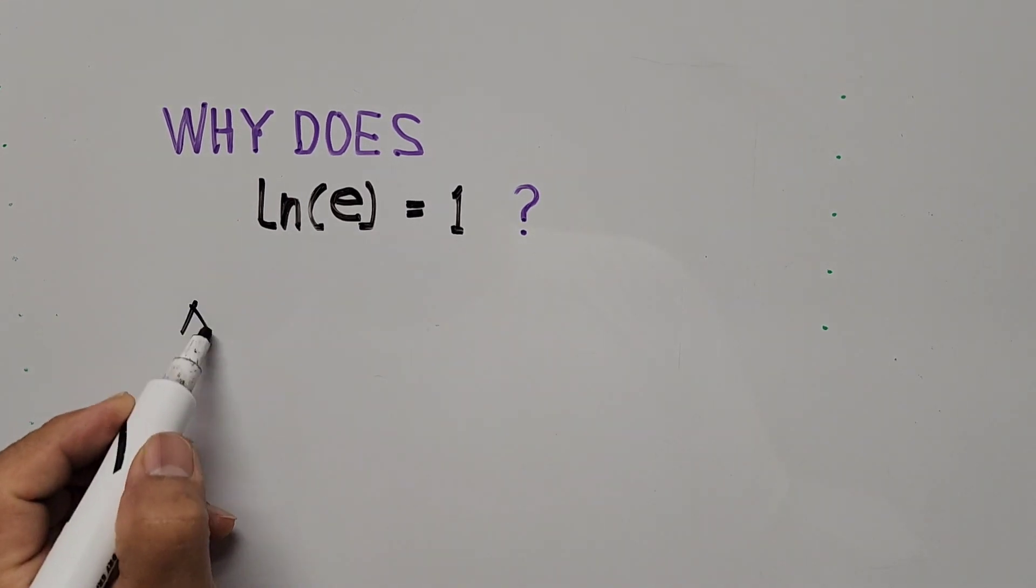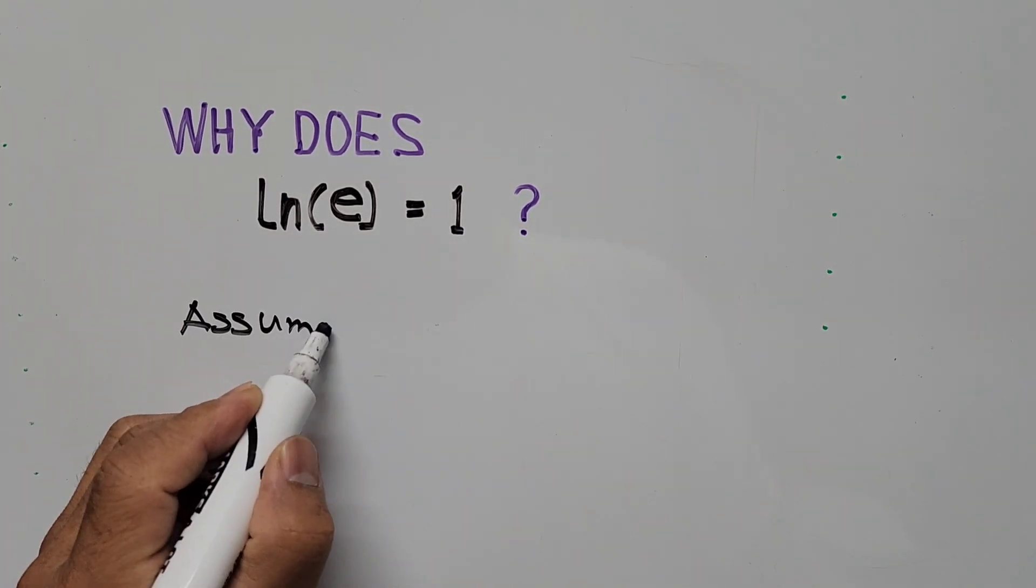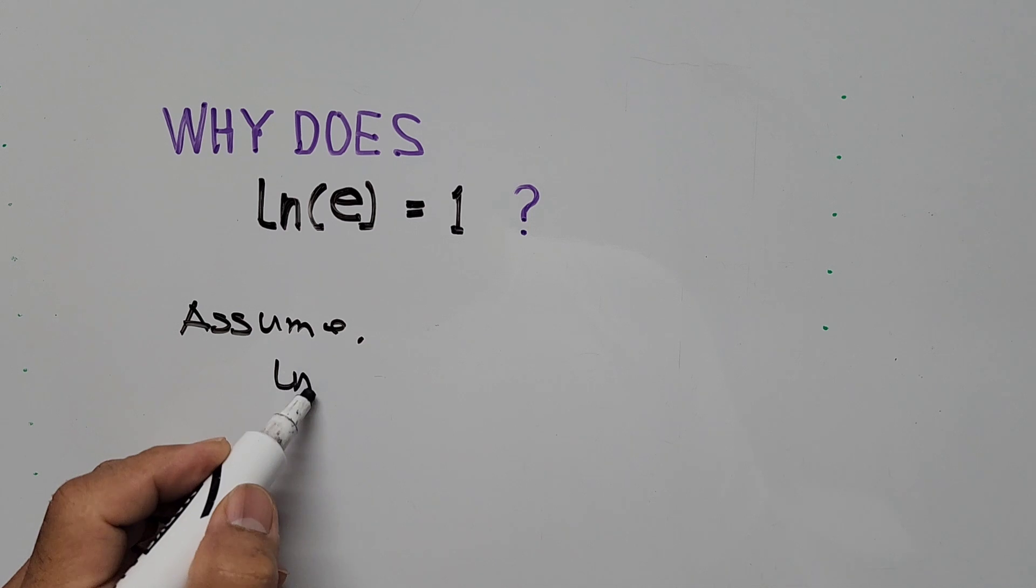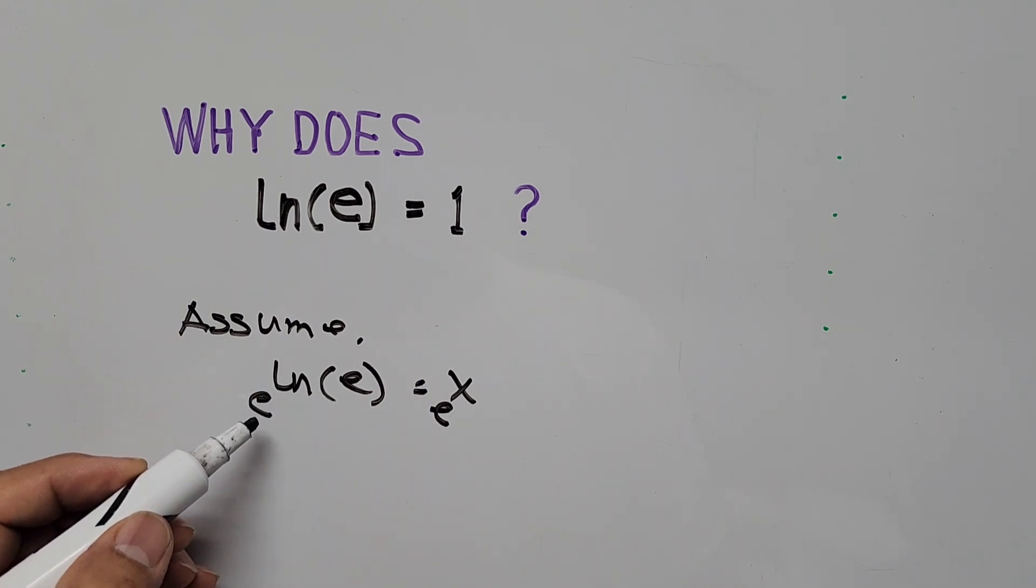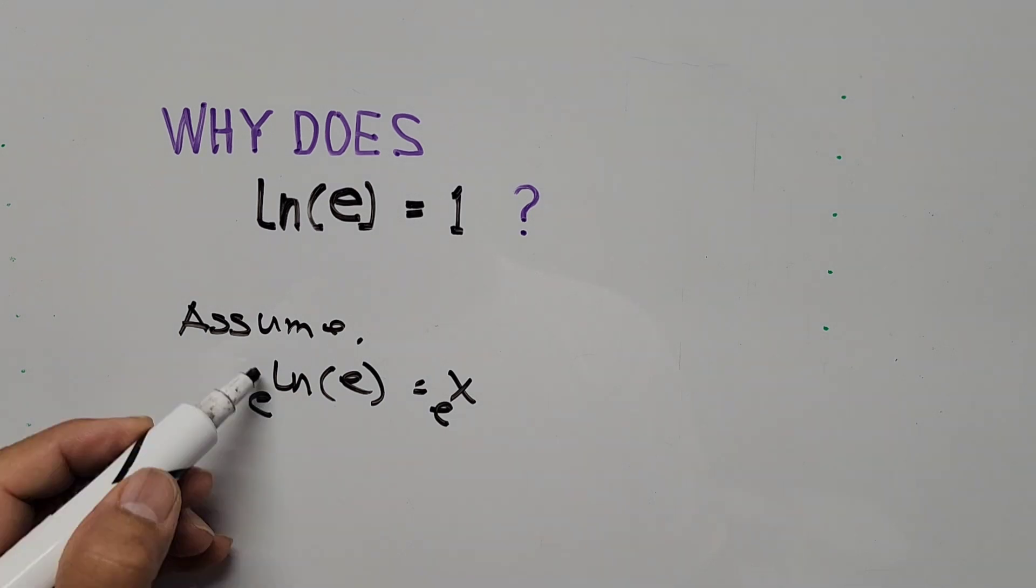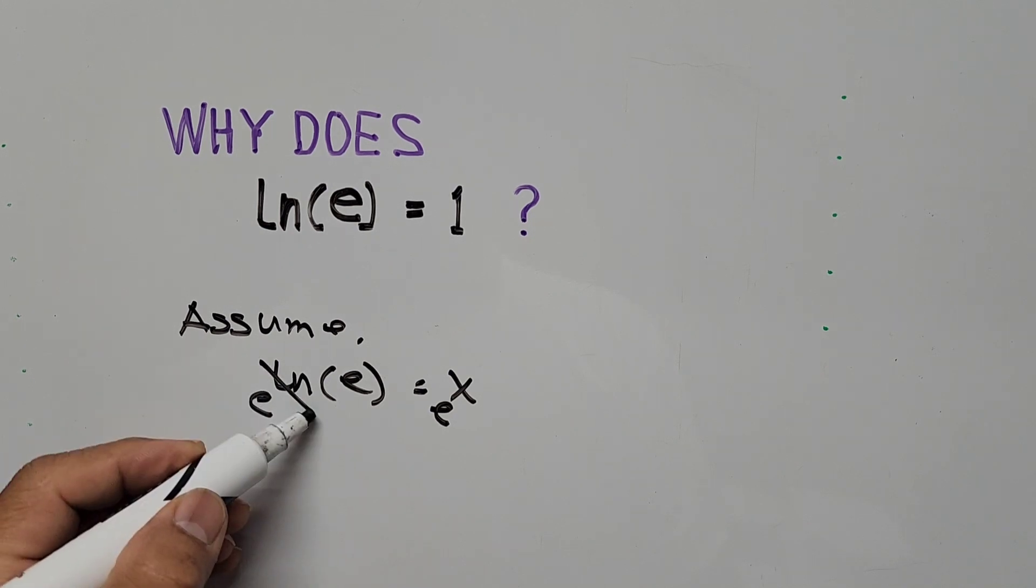We can assume that ln(e) is equal to x. And here, if we exponentiate both sides of the equation with base e, we end up with base e to the exponent ln(e) and e to the power of ln. Since natural logarithm is the inverse function of the exponential function, this ends up canceling.